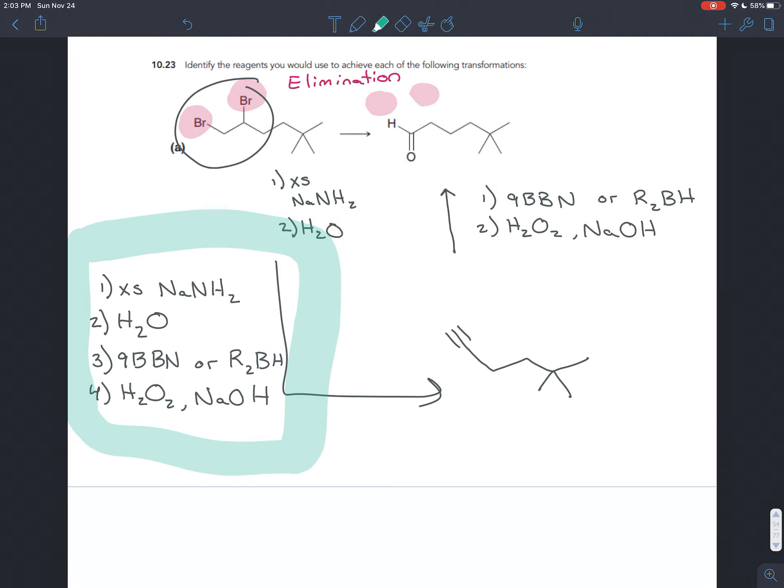To make that whole transformation, it's just four steps. Conceptually, it's really just two: elimination to get the two bromines off and create the alkyne, then addition to get the oxygen on the less substituted carbon.